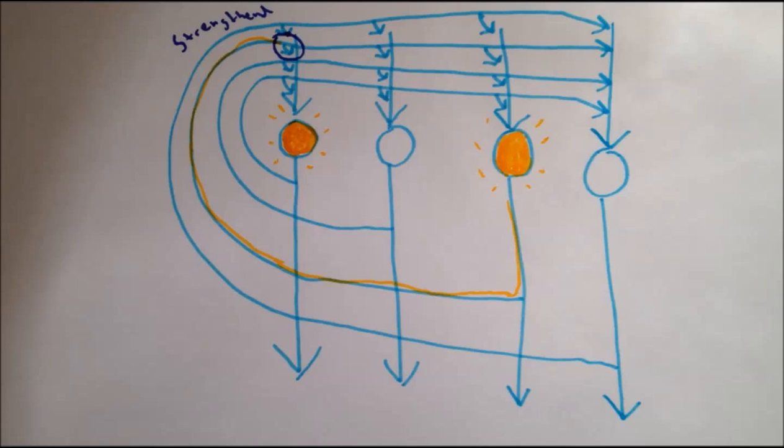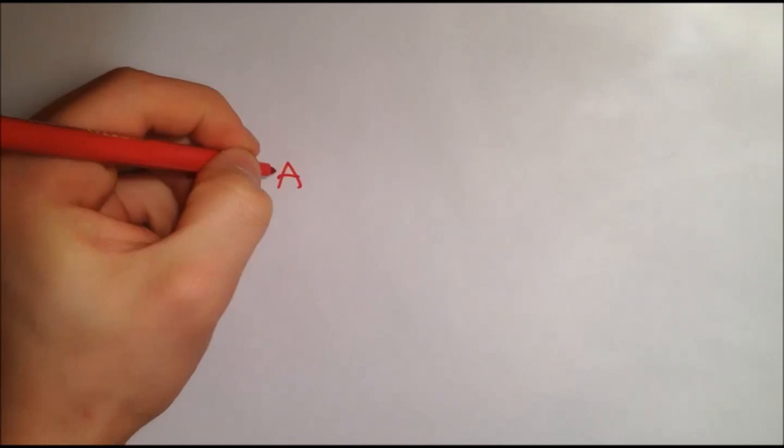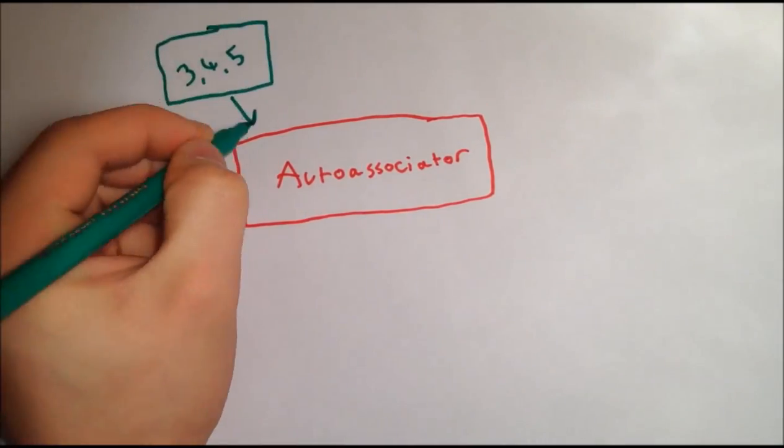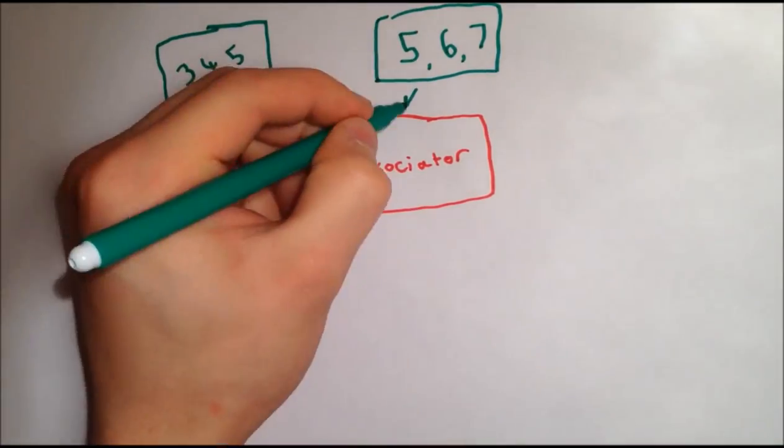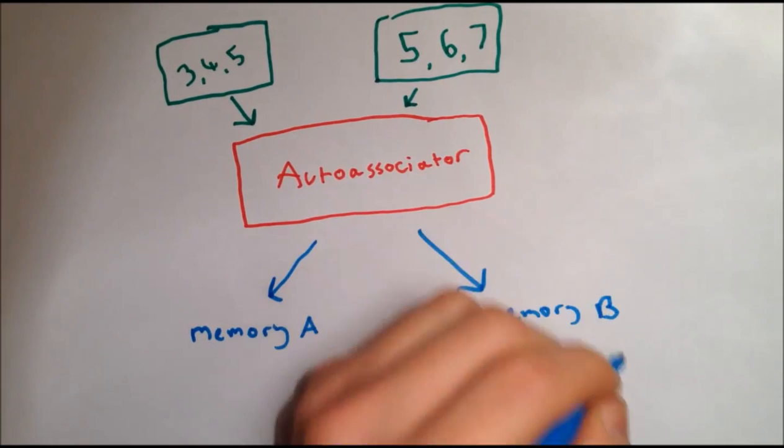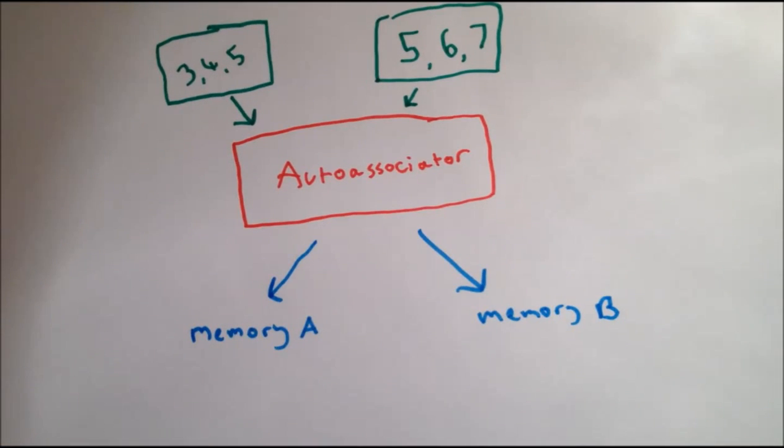However, in order for the CA3 auto-associator to work correctly, inputs need to be relatively unique. If inputs to an auto-associator are very similar, interference can occur. For example, imagine we have an auto-associator which is presented with the number sequences 3, 4, and 5 and 5, 6, 7.